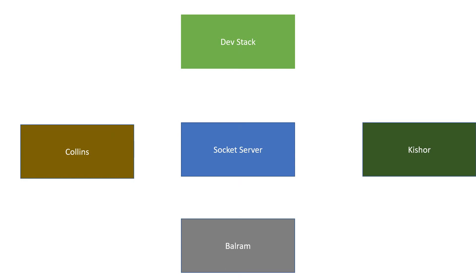We have one socket server and all users are socket IO clients. If Devistack sends a message to Balram, it first goes to the socket IO server, and the server forwards it to Balram. Similarly, if Balram wants to send a message to Devistack, it goes to the socket server which forwards it to Devistack. The same applies to Collins and Kisore.